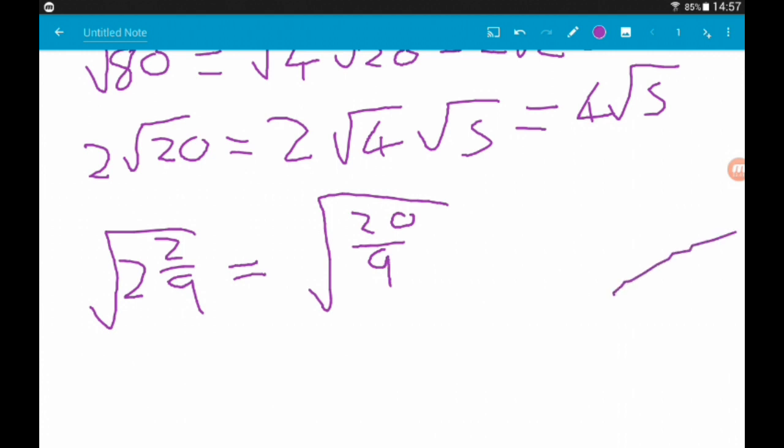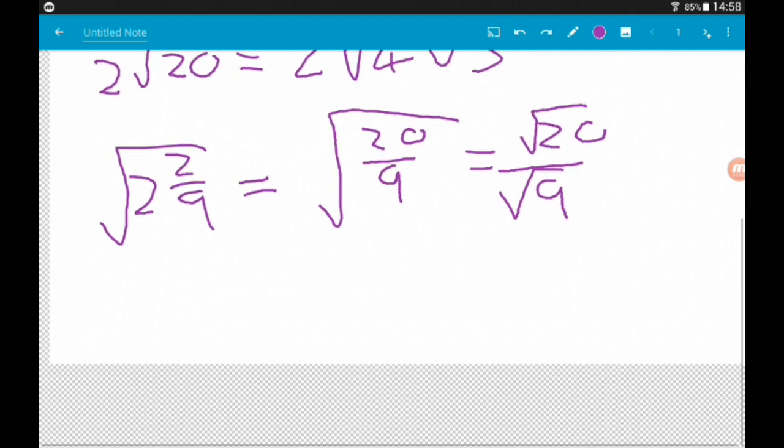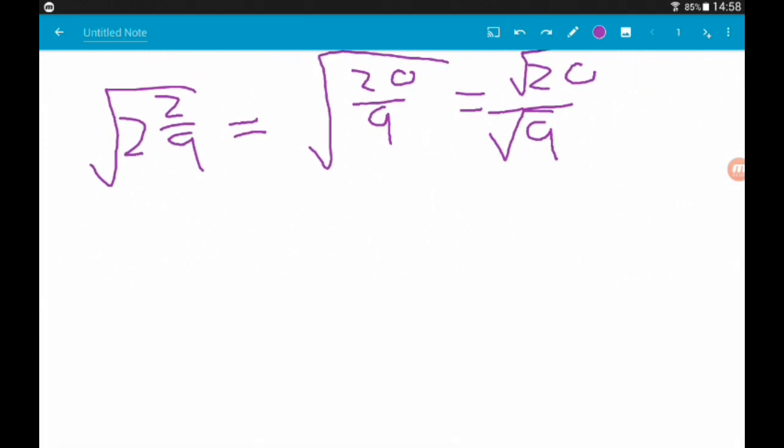Now, when you're square rooting a fraction, you square root the top and square root the bottom. So, we got root 20 over root 9. So, root 20 is root 4 root 5. So, that's what we've got on top.